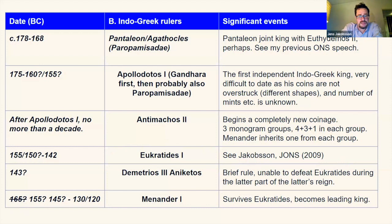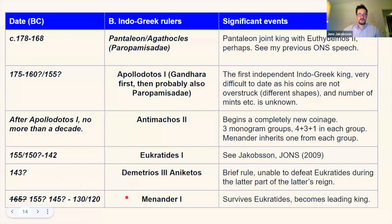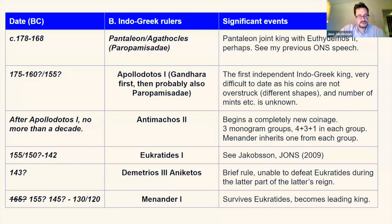Eucratides advanced into India. We have Justin talking about the King Demetrius, King of the Indians, who besieged him but eventually failed. Myself, Ellen Wilson, and other scholars have identified this king perhaps with Demetrius III, who issued very few coins but looked like Demetrius I on his bronzes and was probably supported by Menander. Menander became the leading king, survived Eucratides, and then made conquests in India described in Western sources as well as the Indian religious text Milindapanha, where he's also said to have become a Buddhist monk.